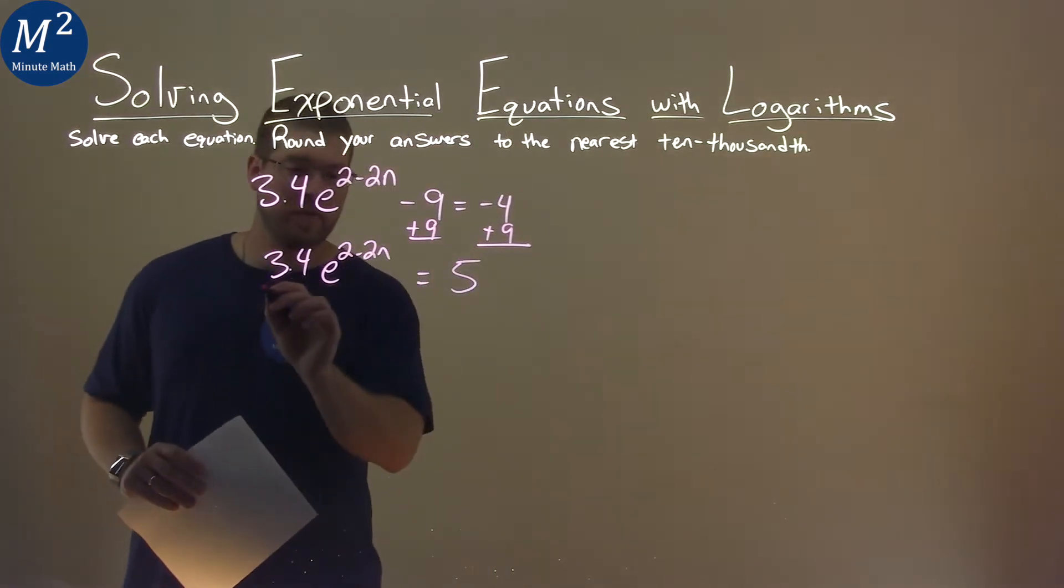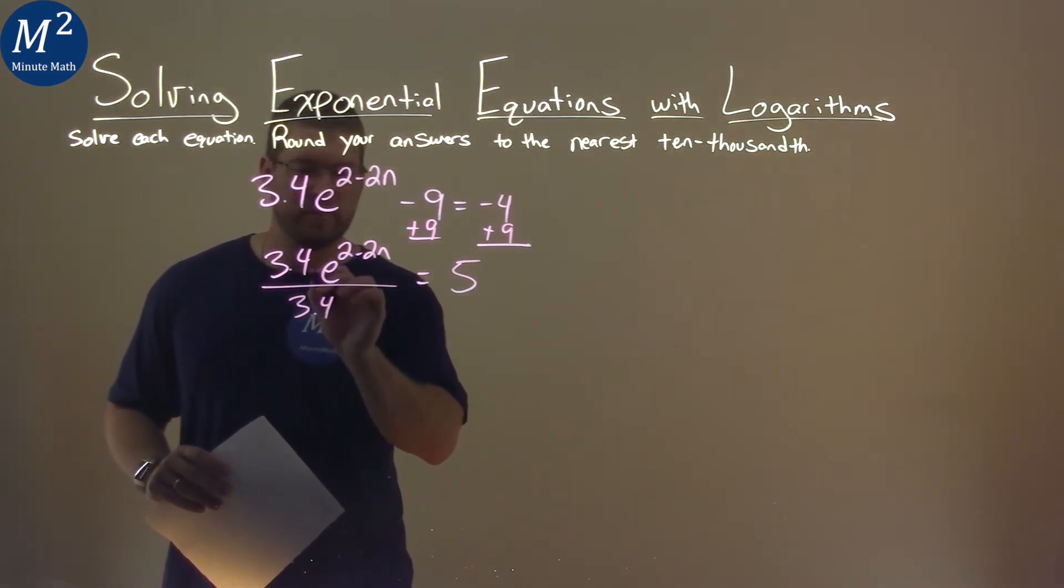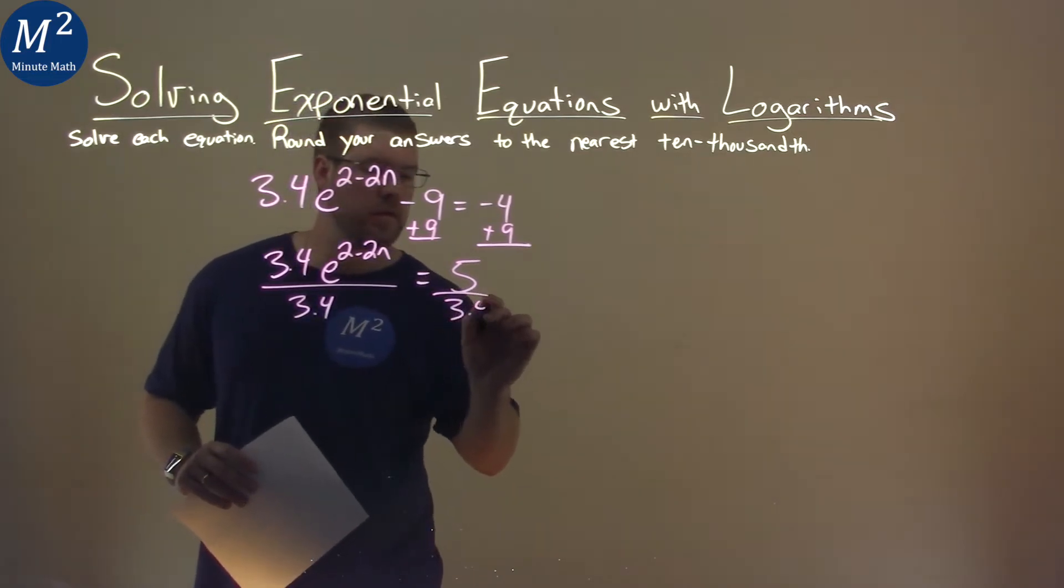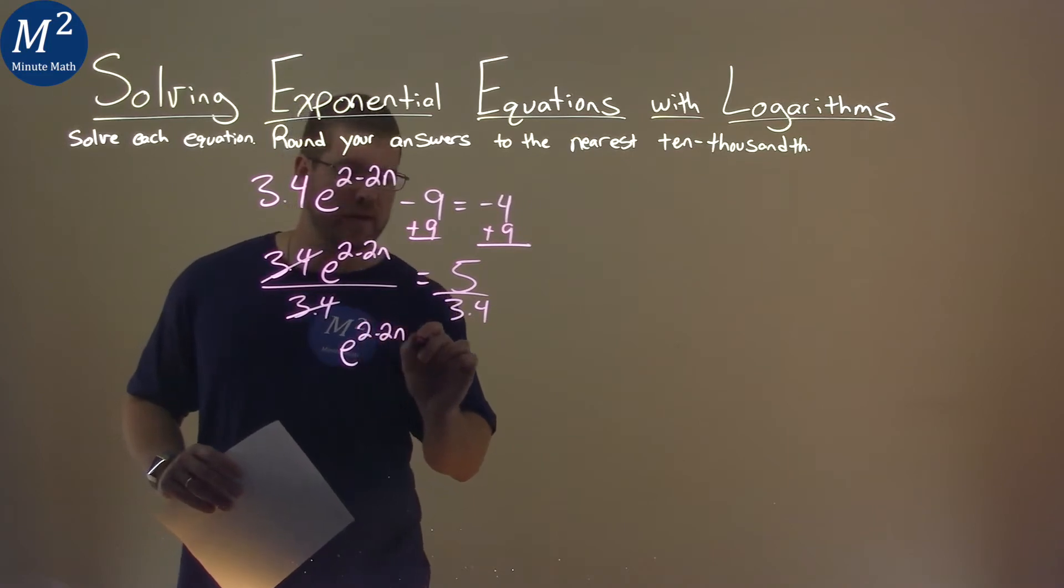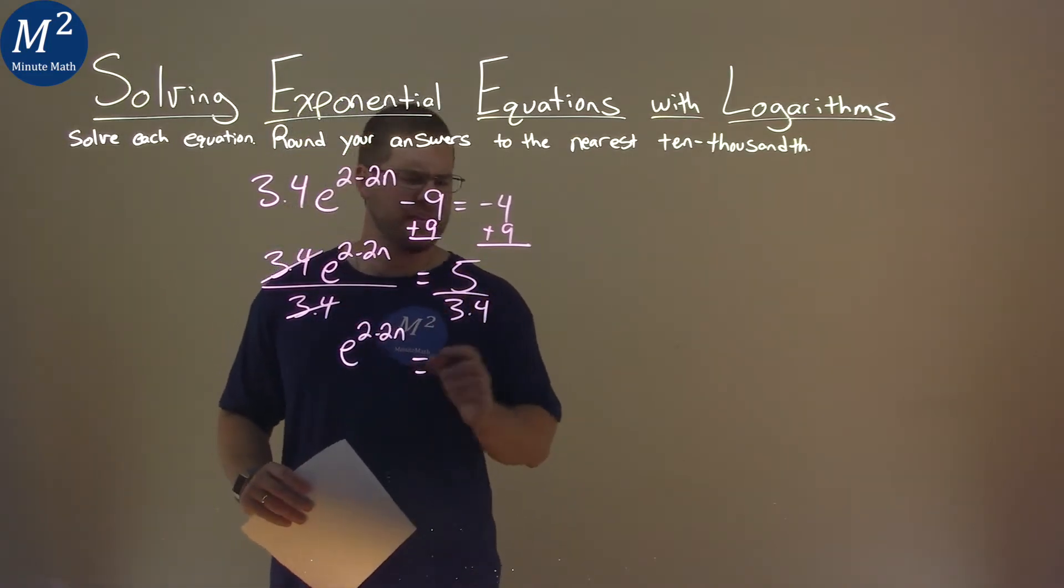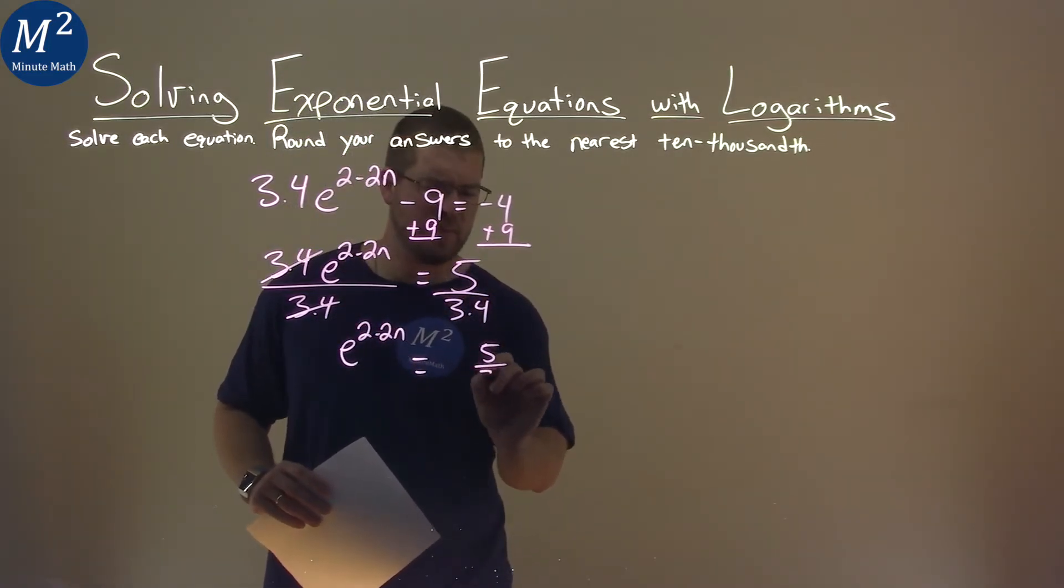From there, I'm going to divide both sides by 3.4. 3.4 will cancel on the left, and we have e to the 2 minus 2n, and that's going to be equal to 5 over 3.4. I like to do all my calculations at the end.